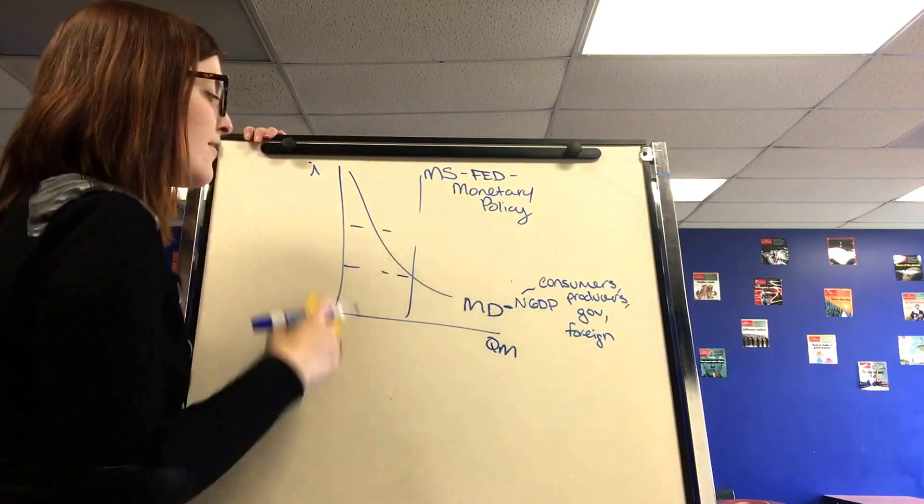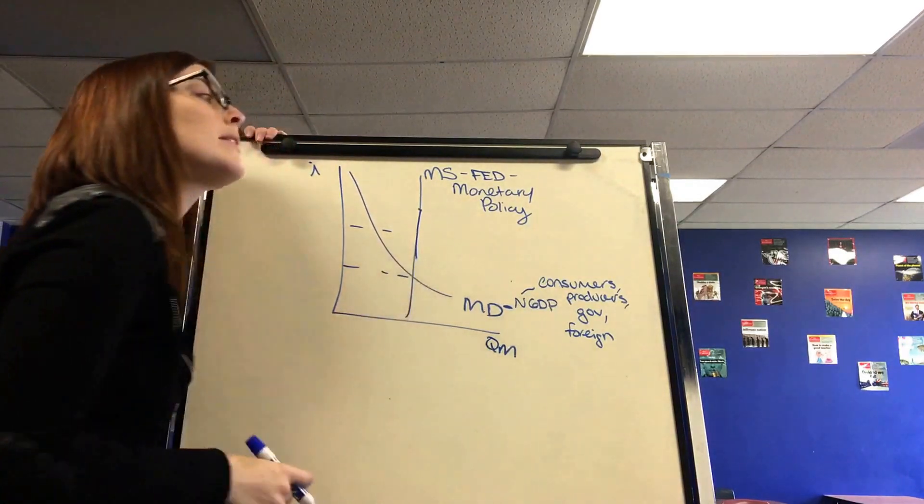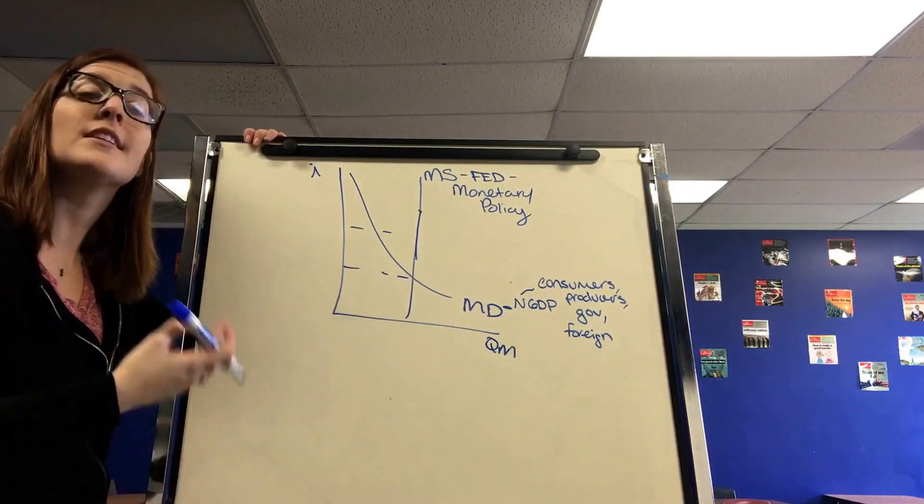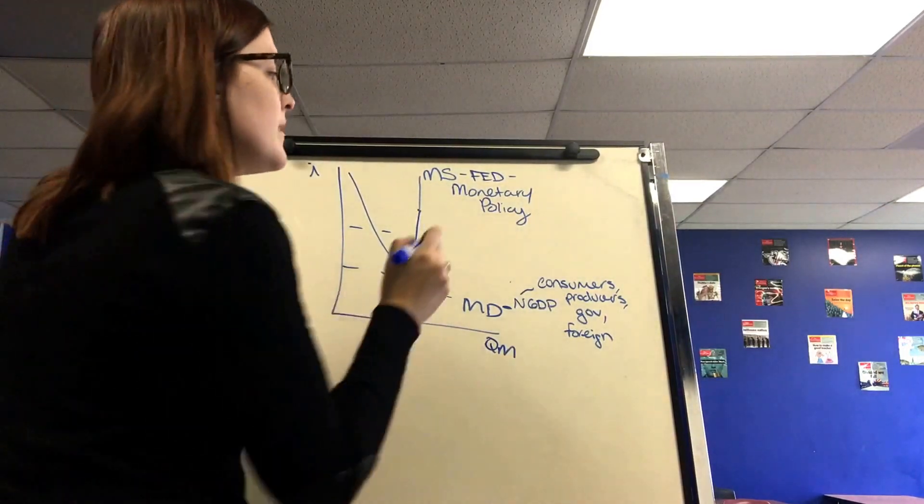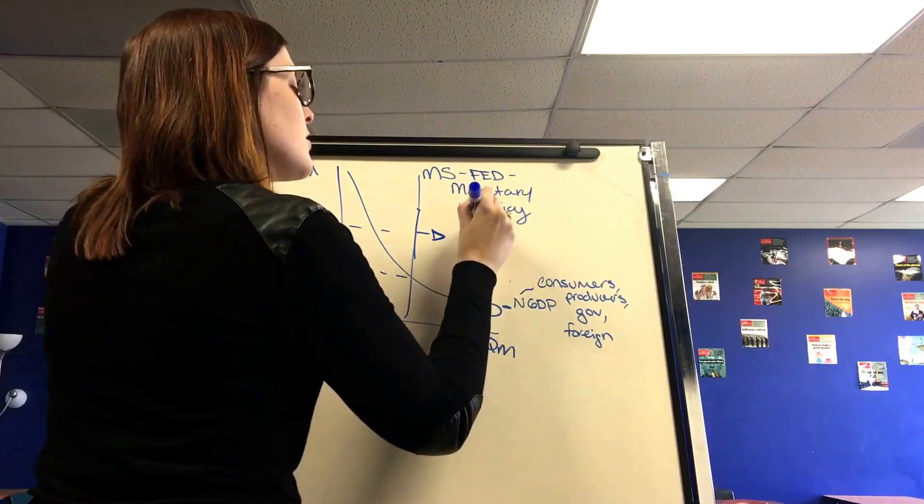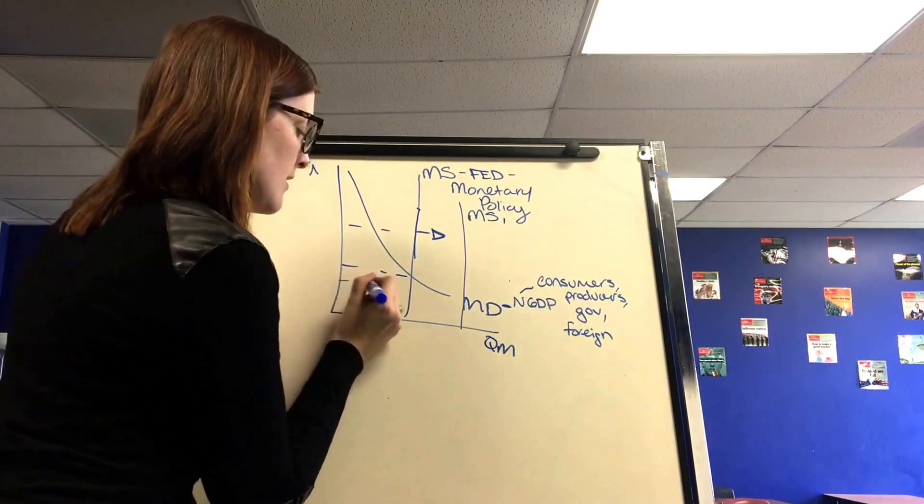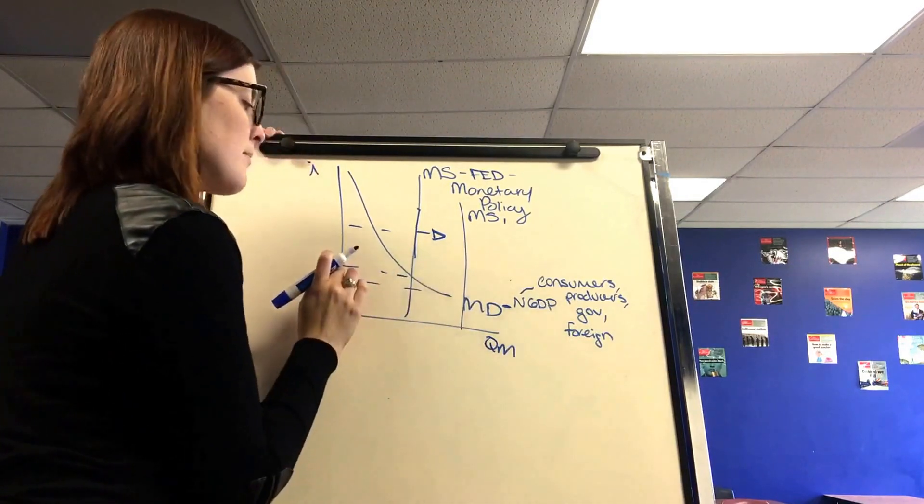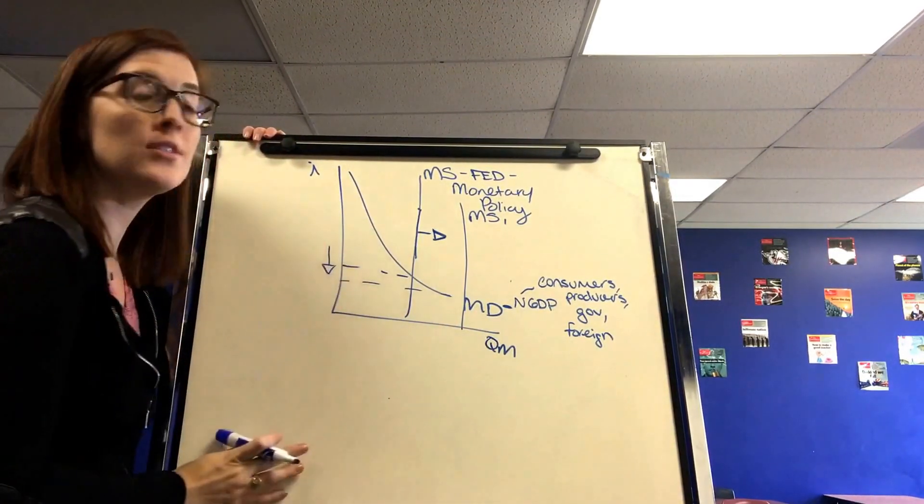So then if the Federal Reserve wanted to fight a recession, we already talked about expansionary monetary policy and the goal of that is to increase the money supply. So here's how this would work. Expansionary monetary policy would increase the money supply, shift the whole money supply curve to the right. This would then decrease nominal interest rates.